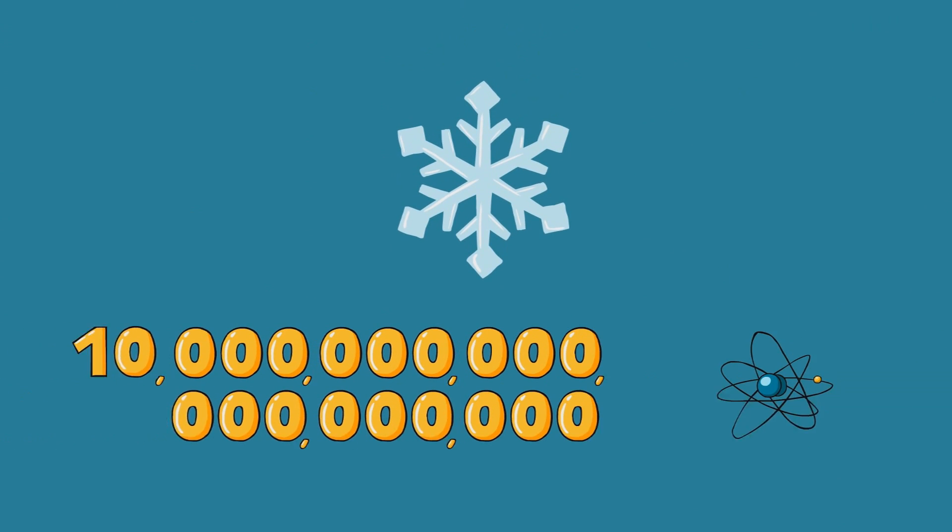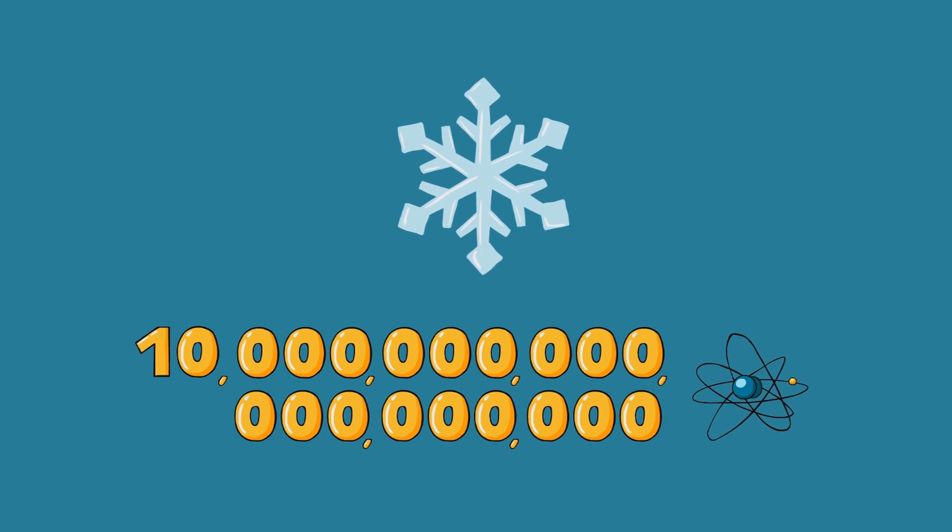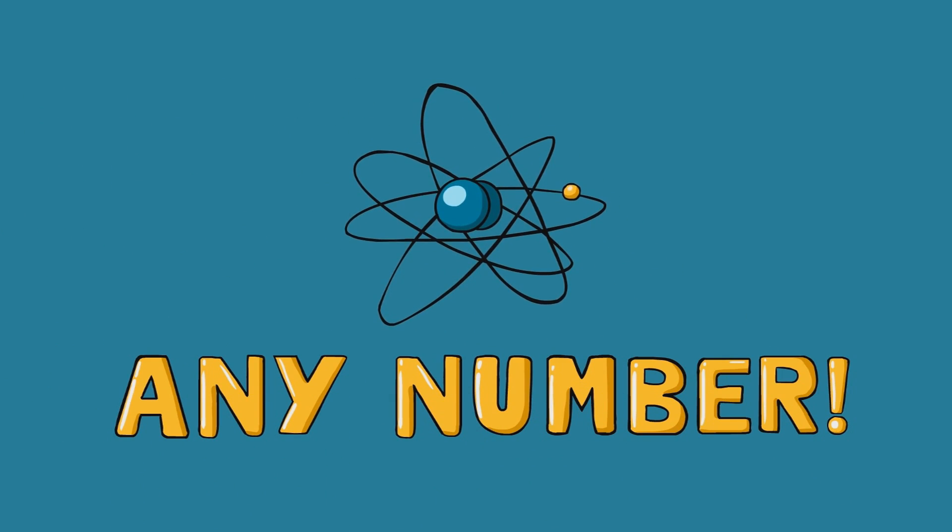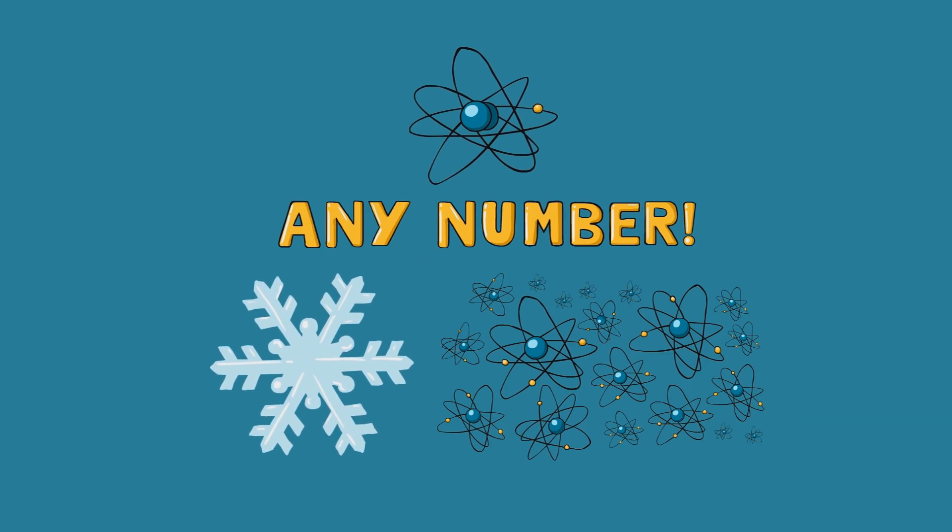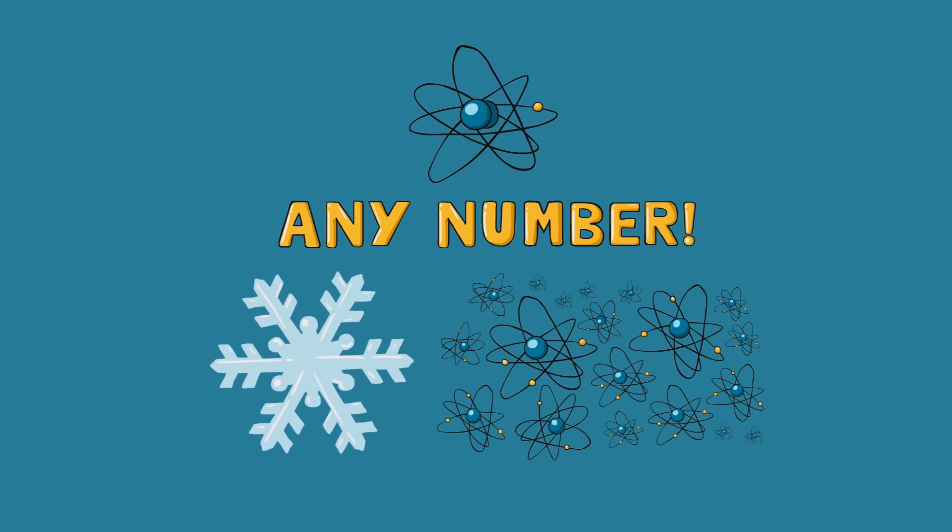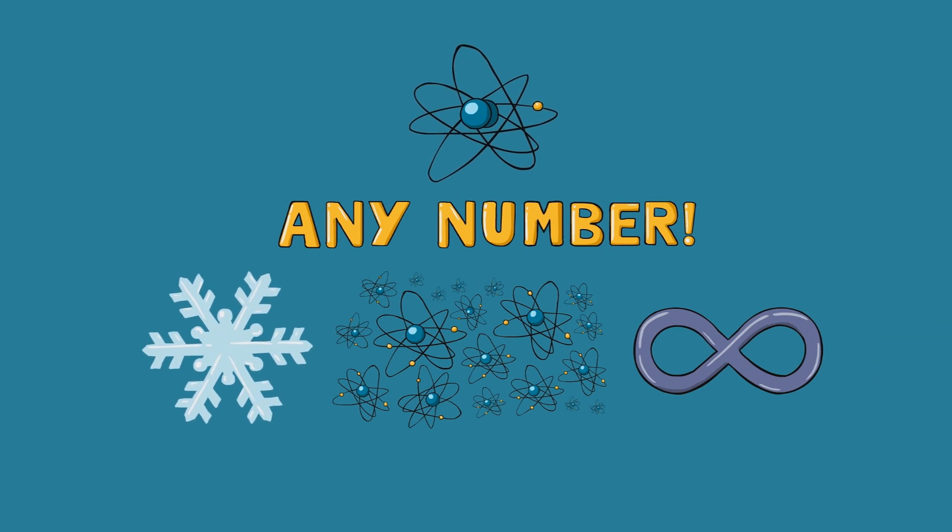For snowflakes, we have 10 to the 19th atoms that can be arranged in any which way. That's on top of the number of deuterium atoms being almost any number, on top of the snowflakes being made up of almost any amount of atoms, on top of the atoms adding to the snowflake in different structures. The closest number to all of this math is infinity.